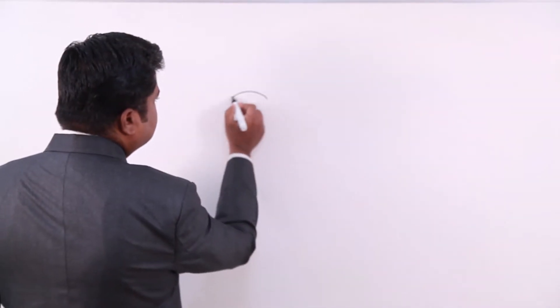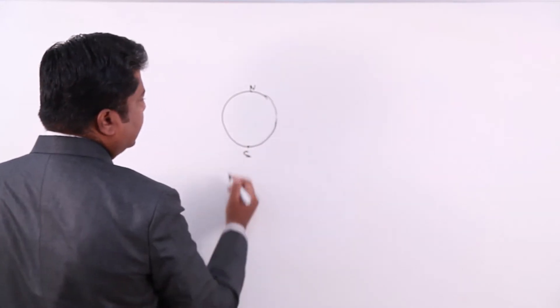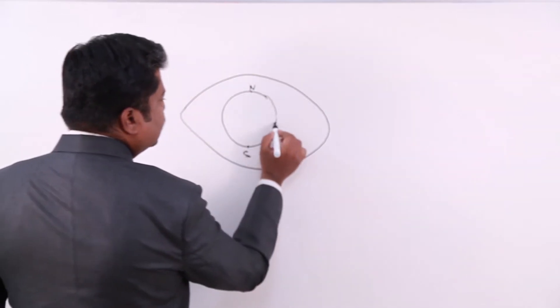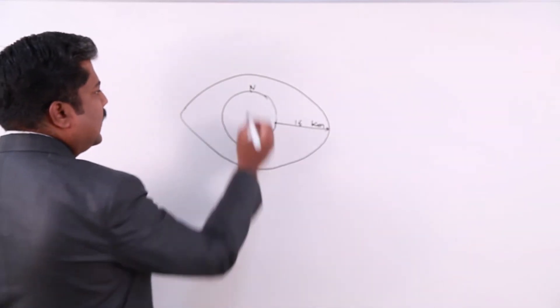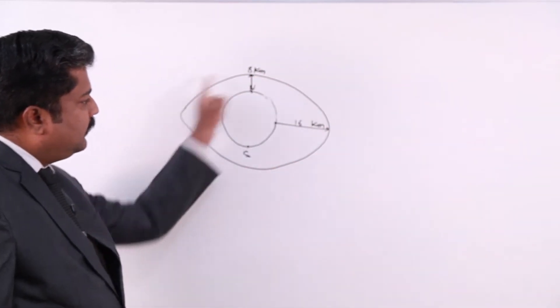In the first part of the atmosphere, called the troposphere, there is presence of water vapors — from around 8 kilometers height at the polar region and 16 kilometers height at the equatorial region. To clarify: if this is Earth, with North Pole and South Pole, the outer jacket of atmosphere is about 16 kilometers at the equator and around 8 kilometers at the poles.